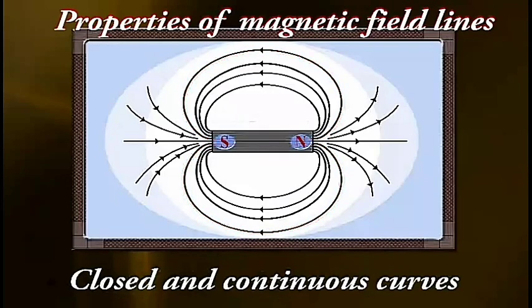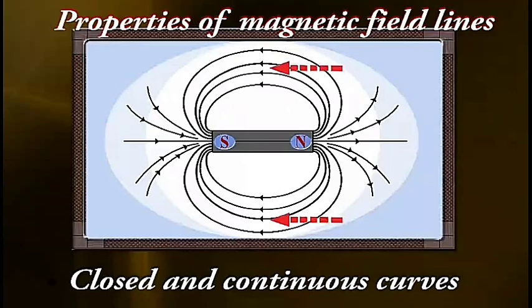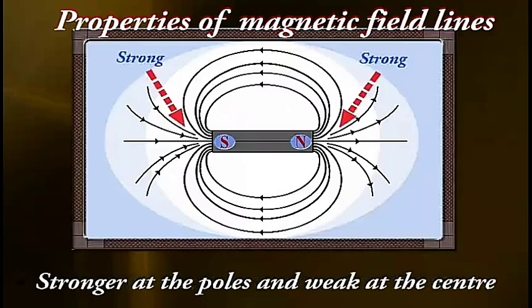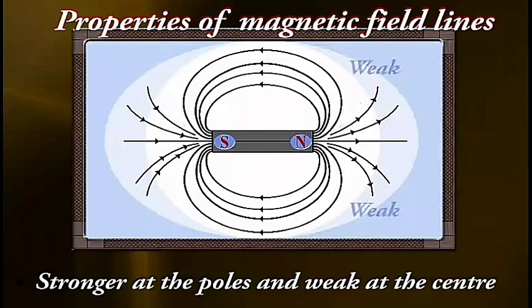The magnetic field lines are crowded near the poles and far apart near the center, thus imparting a stronger magnetic field at the poles as compared to the center where the magnetic field is weak.